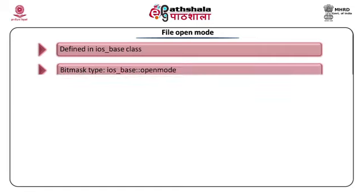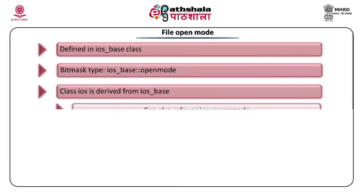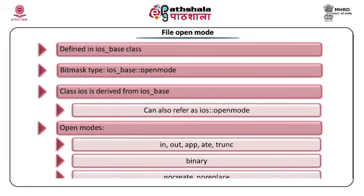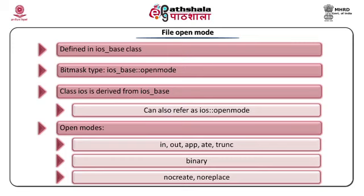File open modes: there are various modes in which a file can be opened. For example, ios::in for input, ios::out for output, ios::app for appending data at the end (output only), ios::ate, ios::trunc, ios::binary for binary IO, ios::nocreate, and ios::noreplace. All these flags are defined in the ios_base class with bitmask type openmode, and because ios is derived from ios_base, they are available to the ios class as well.